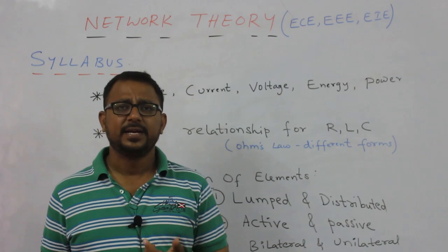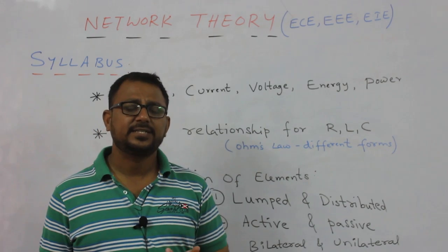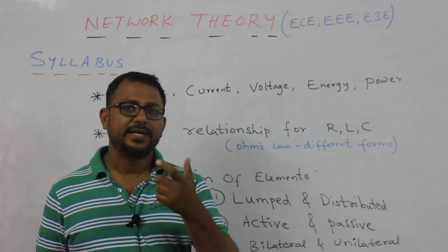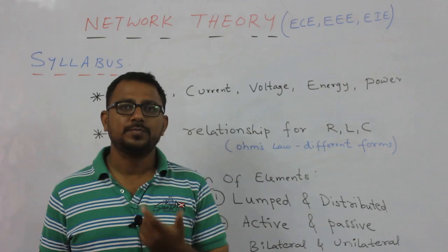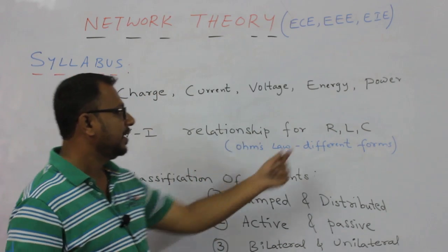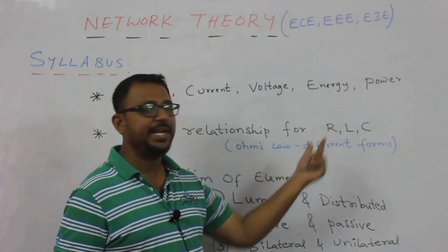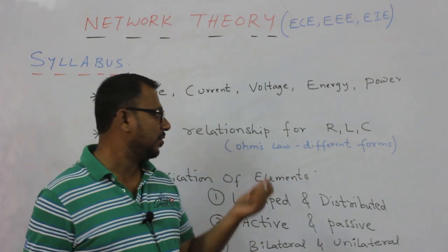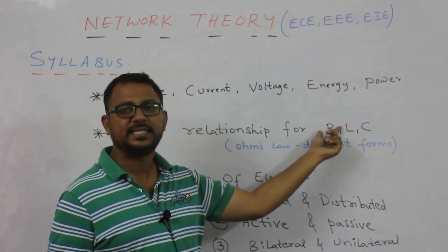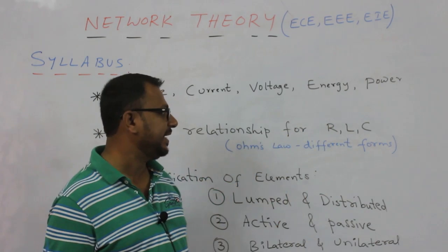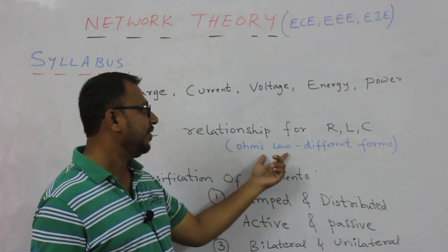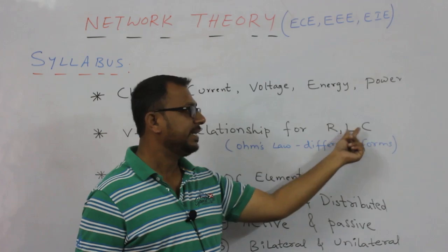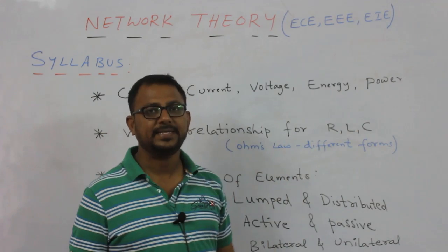The VI characteristics of these elements are basically determined by Ohm's law. For example, for a resistor, V equals IR, which gives you Ohm's law for resistance. Similarly, we will see the different forms of Ohm's law for resistor, inductor, and capacitor.